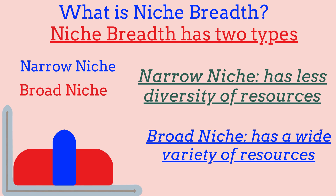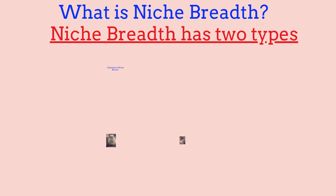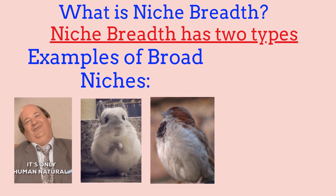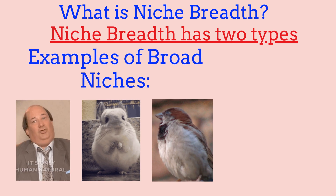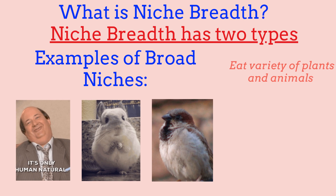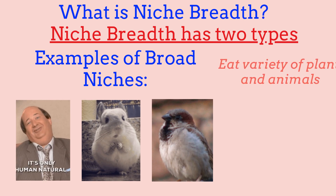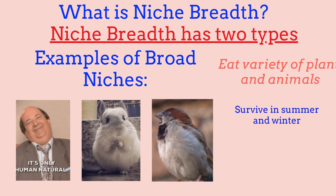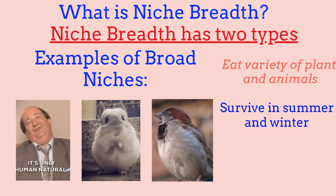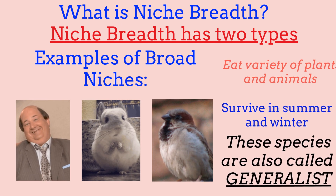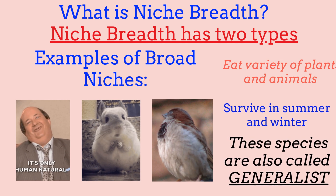Some examples of broad niches are humans, rodents, and house sparrows. Organisms with broad niches use a variety of resources — they eat a variety of plants or animals as seasons change, and adapt to survive both summer heat and winter cold. These types of species are also called generalists.